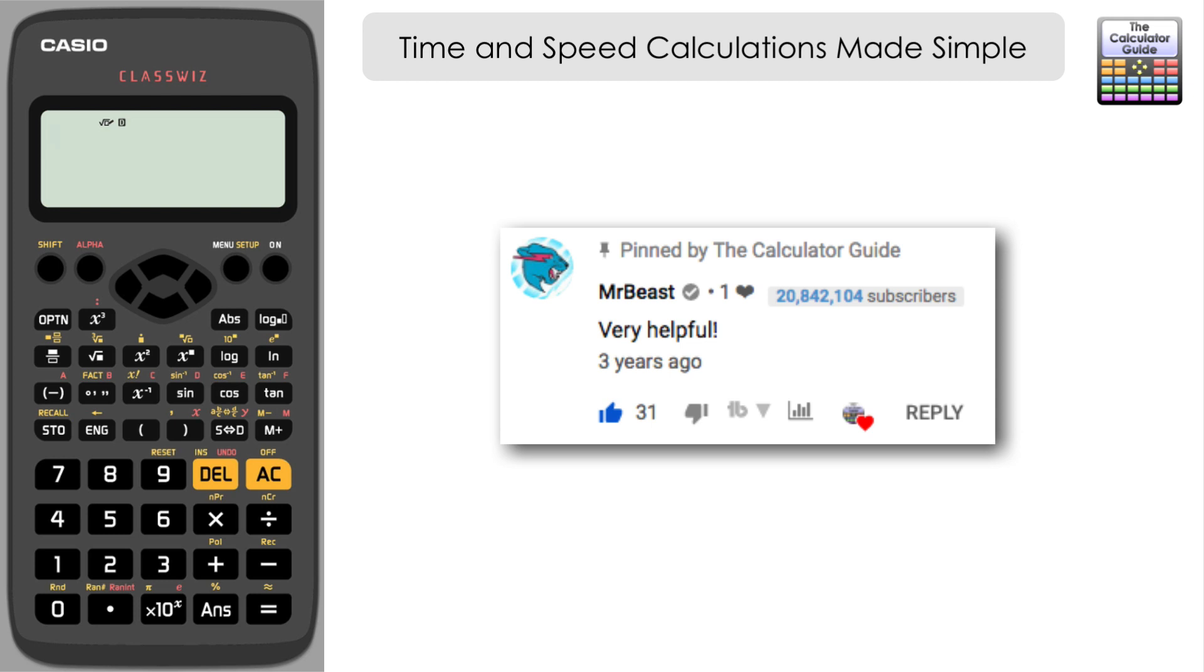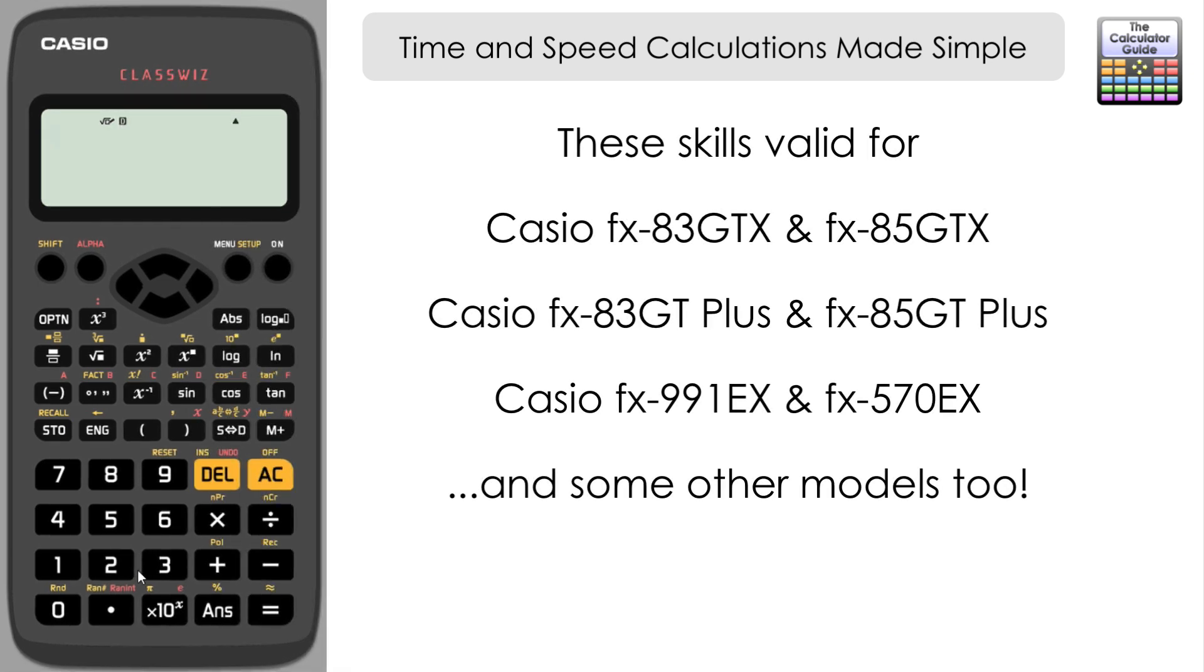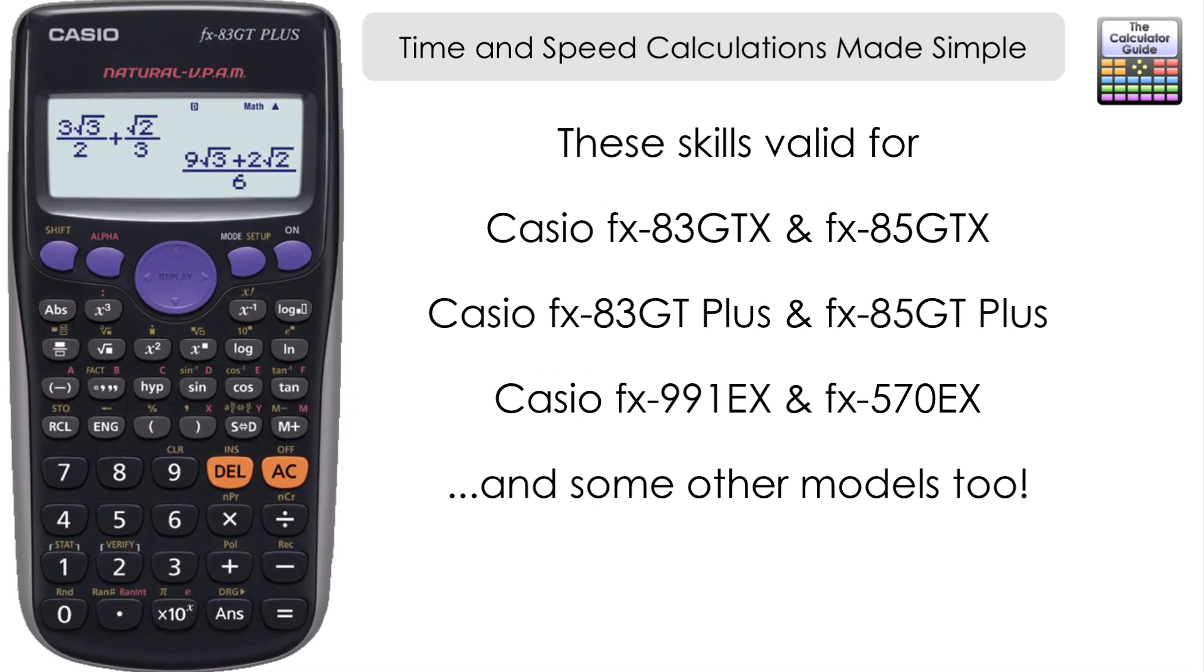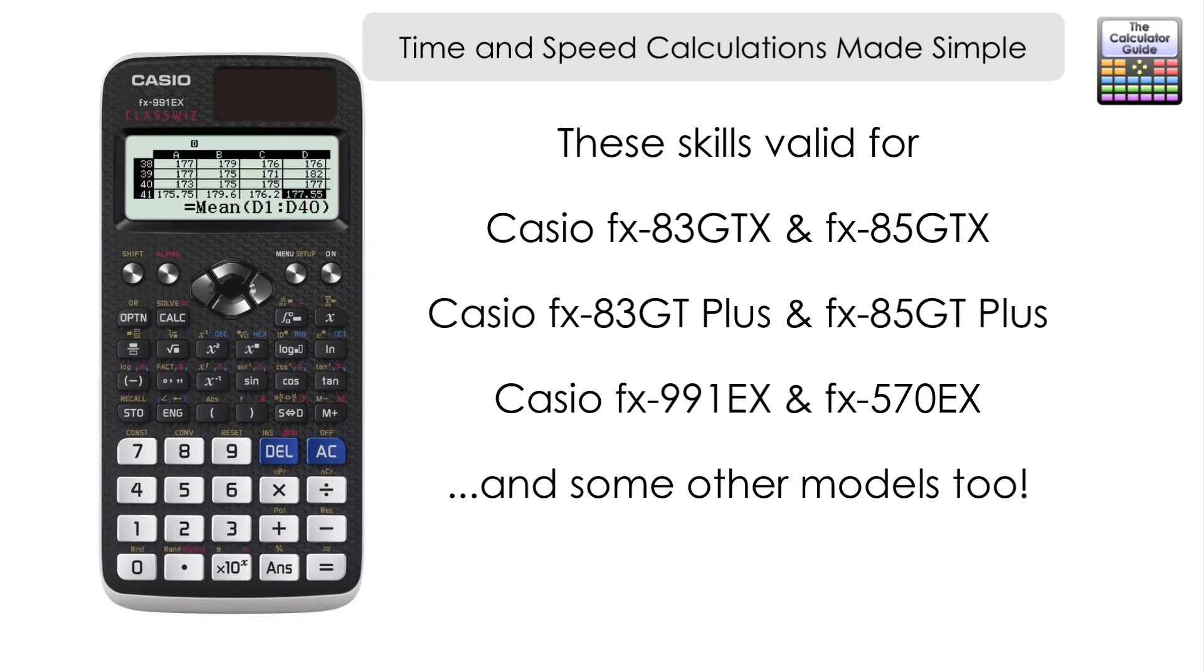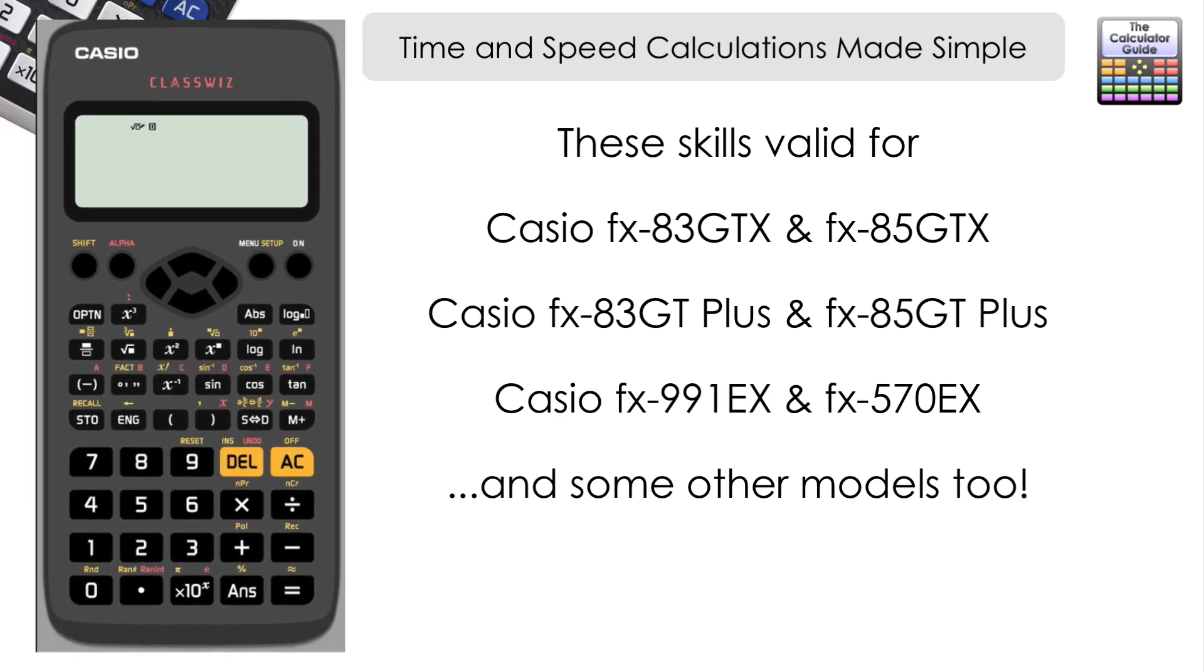So I thought it was time to revisit this particular button and show you some more ways on how it can help you with time-based calculations. I'm going to be doing this on a Casio FX-85GTX, but it's also going to be valid for the previous model the Casio FX-83GT Plus, as well as the Casio FX-991EX ClassWiz. Any calculator that's got this button, it's going to be valid for.